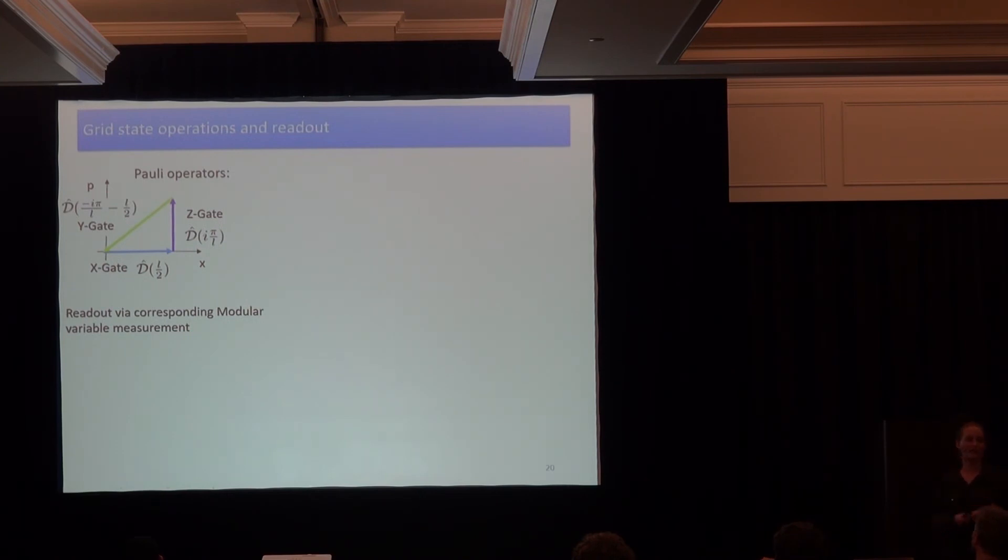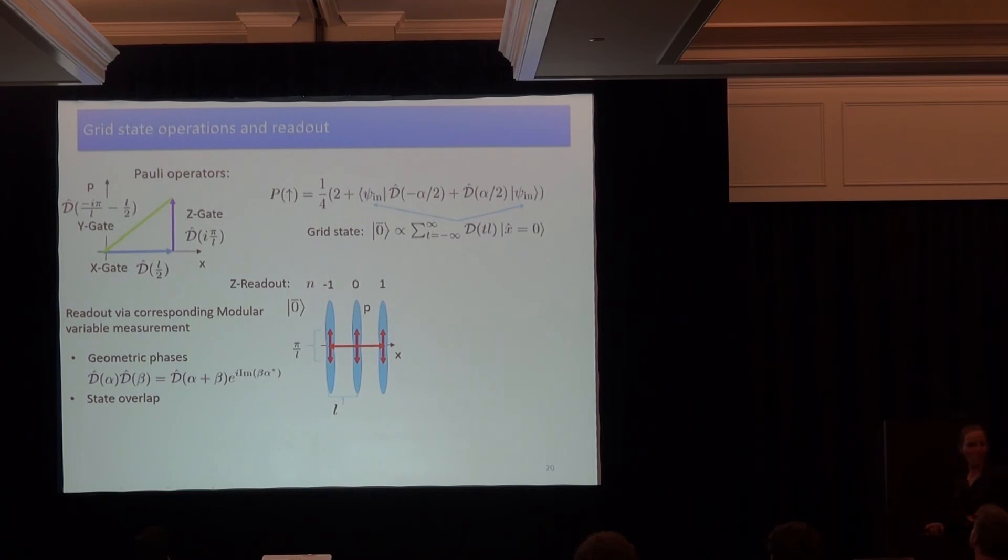So I read out now the state by doing the corresponding modular measurement of this Pauli operation. What do I mean by that? Instead of displacing in phase space, I again pull apart into... I separate into two copies and pull them apart. So let's look at the Z readout. So I take the state. I pull it apart along the Z direction with the separation corresponding to the Pauli operator. If I now want to think about what happens to my internal state, I get a formula if I try to do it analytically where I would plug in the grid state here. It gets a lot of terms, a large sum. And whether these terms add up constructively or destructively depends now on geometric phases.